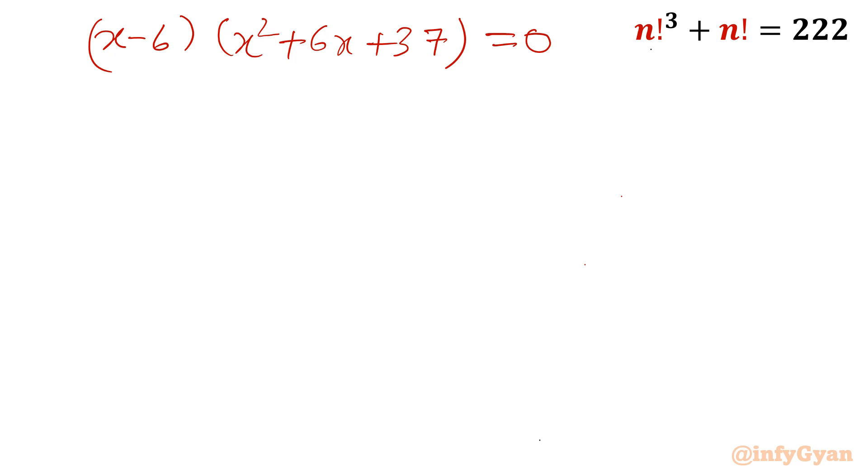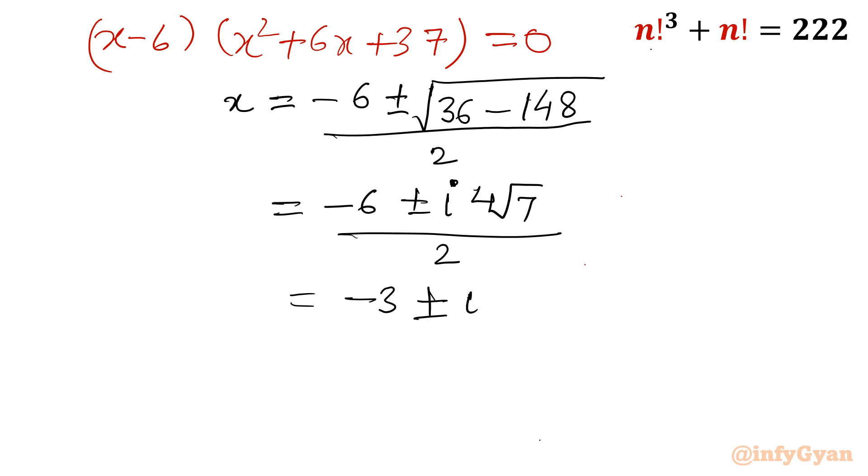If you want to check, you can check using remainder theorem also. So x minus 6, x square plus 6x plus 37 equal to 0. Then now let us find out the factors from quadratic equation. So I will write x is equal to minus b, so minus 6 plus minus square root of 6 square 36 minus 4 times a times c, so 4 times 37 is 120 plus 28, 148 over 2a, so 2. So minus 6 plus minus, I will write i, so it would be 4 root 7 over 2, minus 3 plus minus i times 2 root 7.